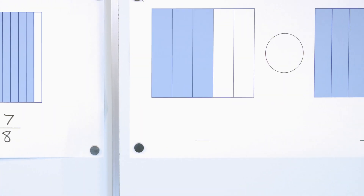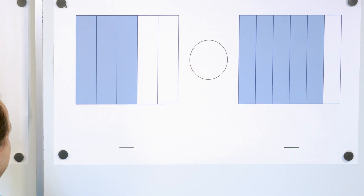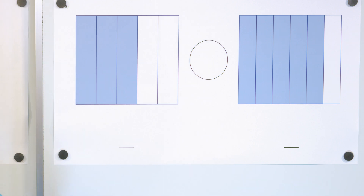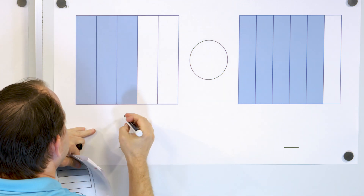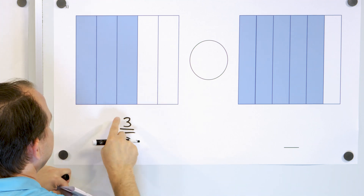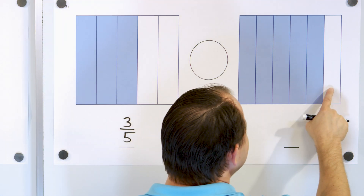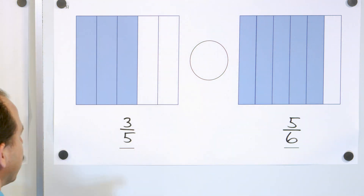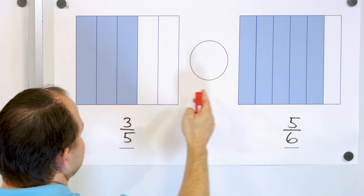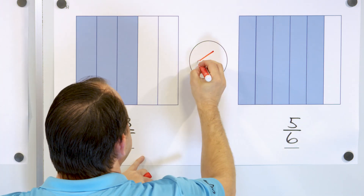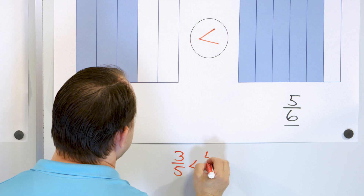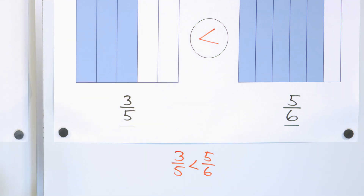Moving right along. We have 1, 2, 3, 4, 5 pieces total, but we actually only have 3 of them — so the fraction is 3 fifths. Here we have 1, 2, 3, 4, 5, 6 pieces and we only have 5 out of those. So we're comparing 3 fifths to 5 sixths. This one has less, this one has more. So 3 fifths is the smaller fraction and the arrow always points to the smaller fraction. We say 3 fifths is less than 5 sixths.